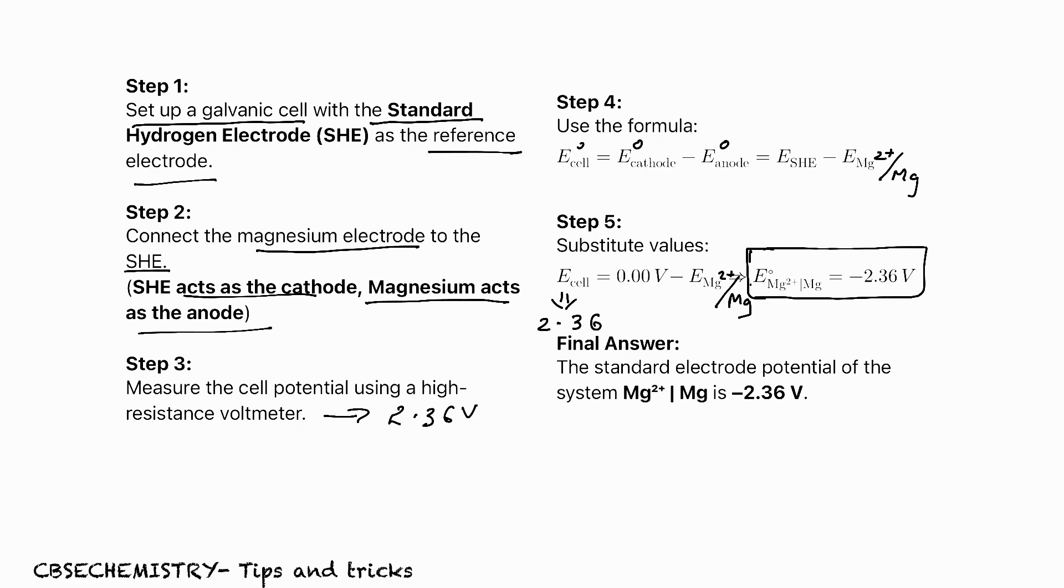Now see how to find E°cell. E°cell equals E°cathode minus E°anode. We already got the E°cell value: 2.36. The E°SHE value we already know is 0 volt. This is what we are supposed to find. We know E cell is 2.36, SHE value is 0 volt. So 2.36 equals 0 minus reduction potential of magnesium half cell. On solving, what you will get?